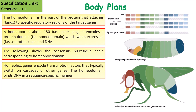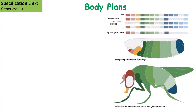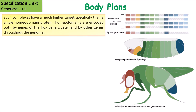The homeodomain binds DNA in a sequence-specific manner. However, the specificity of a single homeodomain protein is usually not enough to recognise only its desired target genes. Most of the time, homeodomain proteins act at promoter regions of their target genes as complexes with other transcription factors. Such complexes have a much higher target specificity than a single homeodomain.